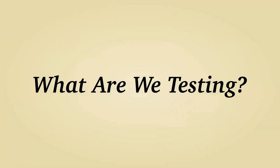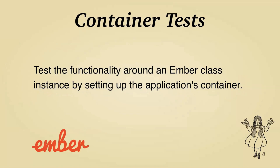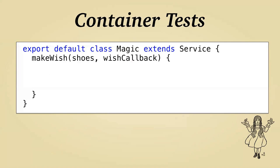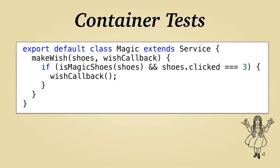The next type of test that Ember can help us set up are container tests. These give you access to the application container so you can pull things out for your test context. Something we might want to use here would be a service that we use to perform some magic. In this service, we have a `makeAWish` function that takes in our shoes and a wish callback. If we have magic shoes and they've been clicked three times, we'll execute our wish.